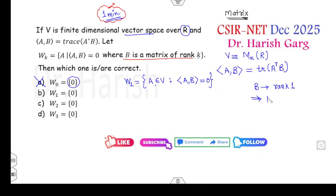Now look at the second one, W_1. Once it's W_1, that means B is a matrix whose rank is 1. If rank is 1, that means matrix B is non-zero. But according to the definition of inner product, trace(A^T B) is 0, that implies A must be 0, because B is non-zero. By definition of inner product, A must be 0. If A is 0, then W_1 must be {0}. So option B is correct.